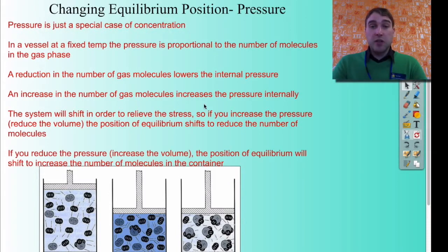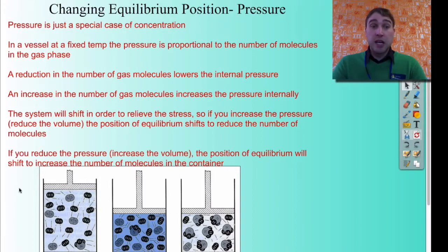If you increase the pressure by reducing the volume, the position of equilibrium shifts to reduce the total number of molecules in your mixture. And if you reduce the pressure by increasing the volume, the position of equilibrium shifts to increase the number of molecules in the container.